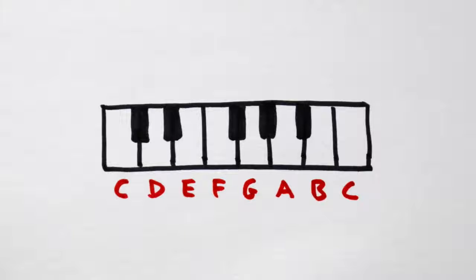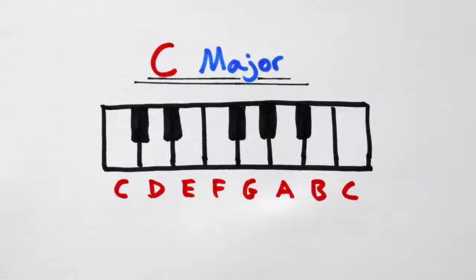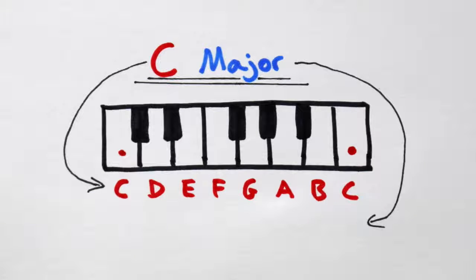Many different types of scale exist, but this particular one is called C major. Why? Well, C because it starts on a C. And it's major because it follows our tone, tone, semitone, tone, tone, tone, semitone formula.